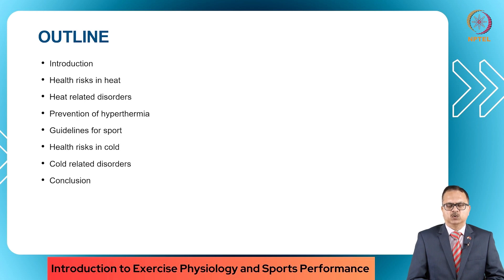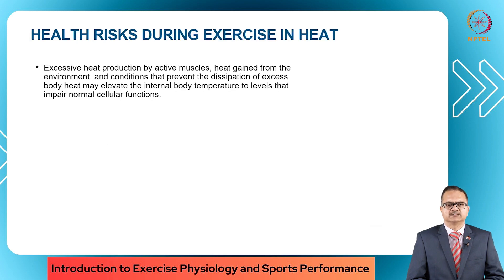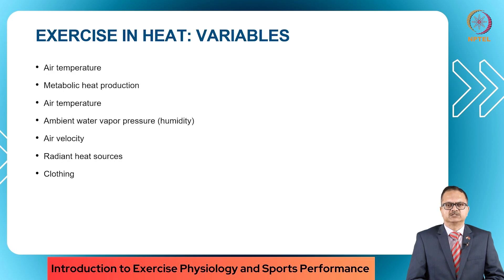There are several health risks during exercise in heat. It happens because when the muscles are active there is a lot of heat production, there is heat gained from the environment, and there may be conditions which prevent the dissipation of body heat. This will elevate the internal body temperature to levels that impair normal cellular functions. Several variables affect exercise in heat: air temperature, rate of metabolic heat production, ambient water vapor pressure, air velocity, radiant heat sources, and clothing.